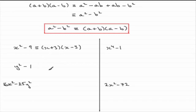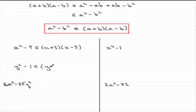Now in this example, y squared minus 1 — this is the difference of two squares. This is the square of y, and 1 is the square of 1, since 1 squared is 1. So the a corresponds to y and the b corresponds to 1. So we get that this is identical to y plus 1 times y minus 1, or you could write it the other way round as y minus 1 times y plus 1.